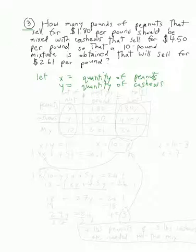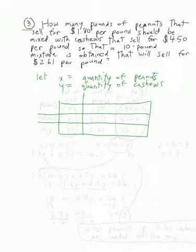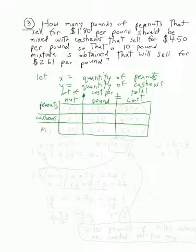We create our table again. The columns are: amount of nuts, cost per pound, and total cost. Note that cost per pound multiplied by the quantity of nuts equals the total cost. The rows are peanuts, cashews, and the mix. x goes in the peanuts row, y in the cashews row, and 10 goes in the mix row since there's a 10-pound mixture.